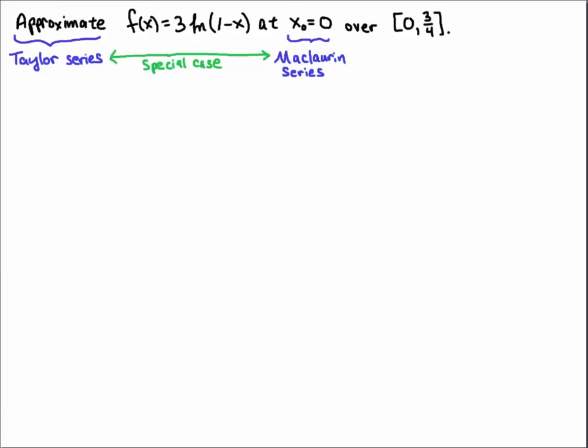Okay, first I want to point out that the Taylor series at x naught equals 0 is often called a Maclaurin series. I'll just refer to it as a Taylor series expanded about x naught equals 0, but they're really the same thing. If it's expanded upon any other point other than 0, we would just call it a Taylor series.